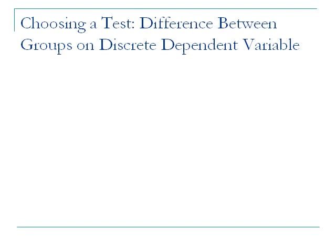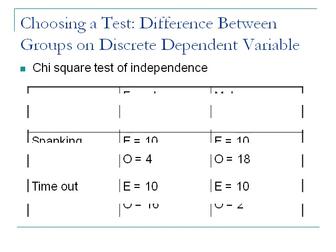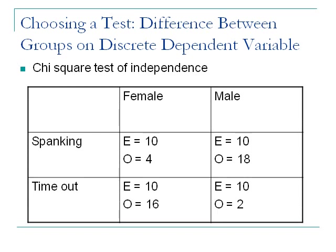All those tests were looking for differences between groups on a continuous DV. What if you have a discrete dependent variable? In that case, you would use the Chi-square Test of Independence. An example: is there a difference between men and women on their preferred method of discipline — spanking versus timeout? You could look at it as a continuous DV by asking how much they approve of each, doing separate t-tests. But if you just want to know which one they prefer when forced to choose, that's a discrete DV and you use chi-square.